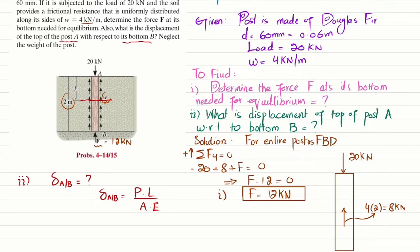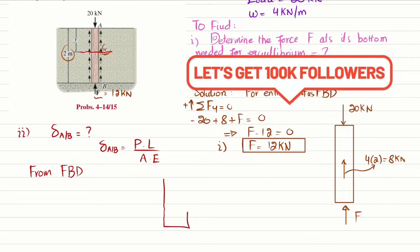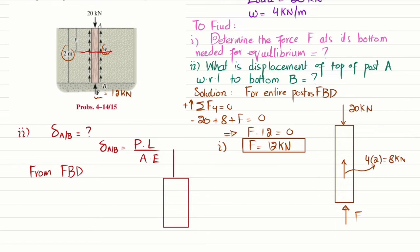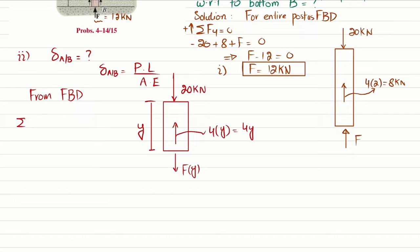We cut the post at a distance y from the top and draw the free body diagram. We have the 20 kilonewton load at the top, and the distributed load converted to a point load over length y gives w times y = 4y kilonewtons acting upward. At the cut section, there is a reaction force Fy that varies with y. We apply the equation of equilibrium: sum of all forces in y equals zero, with upward positive.